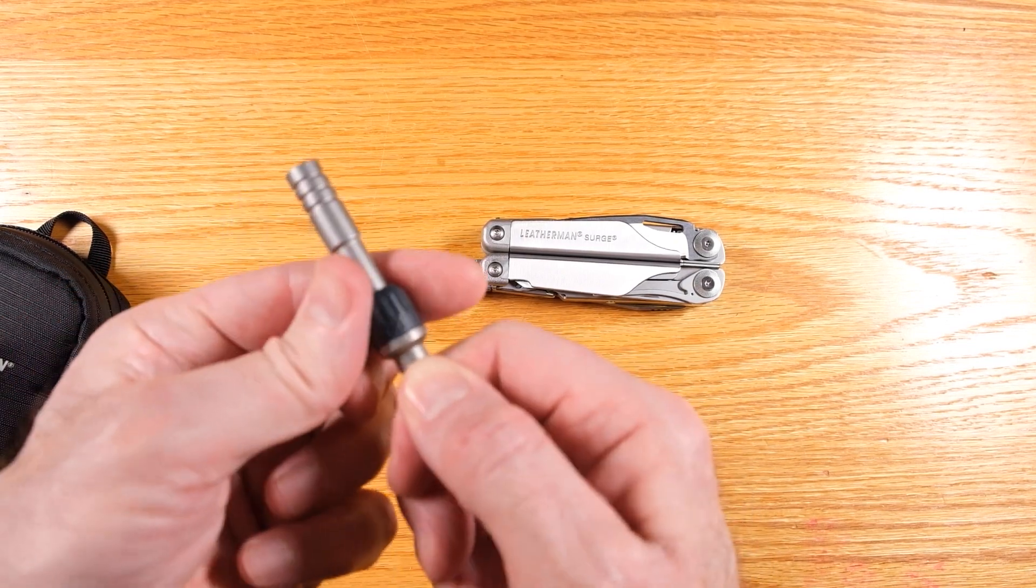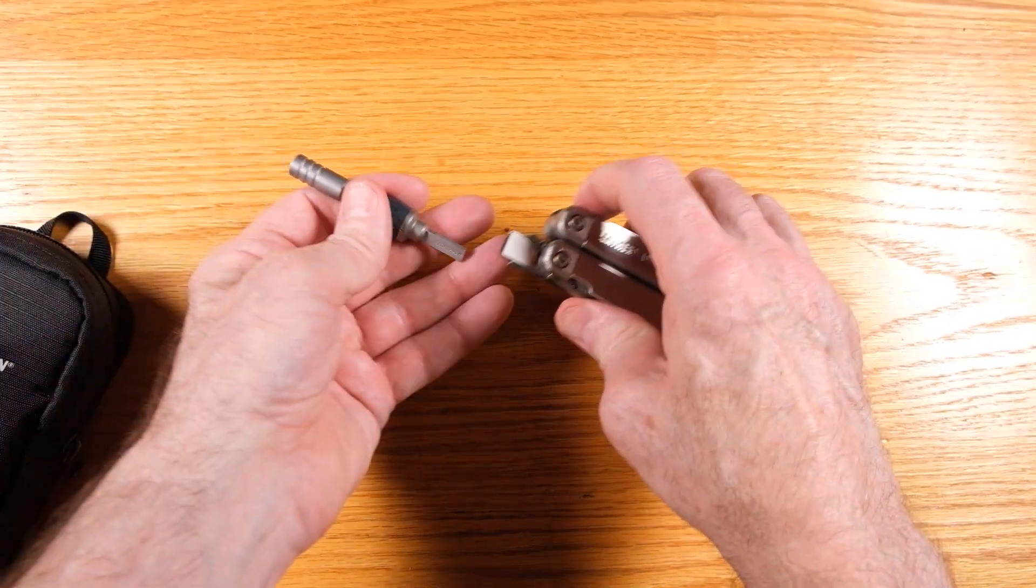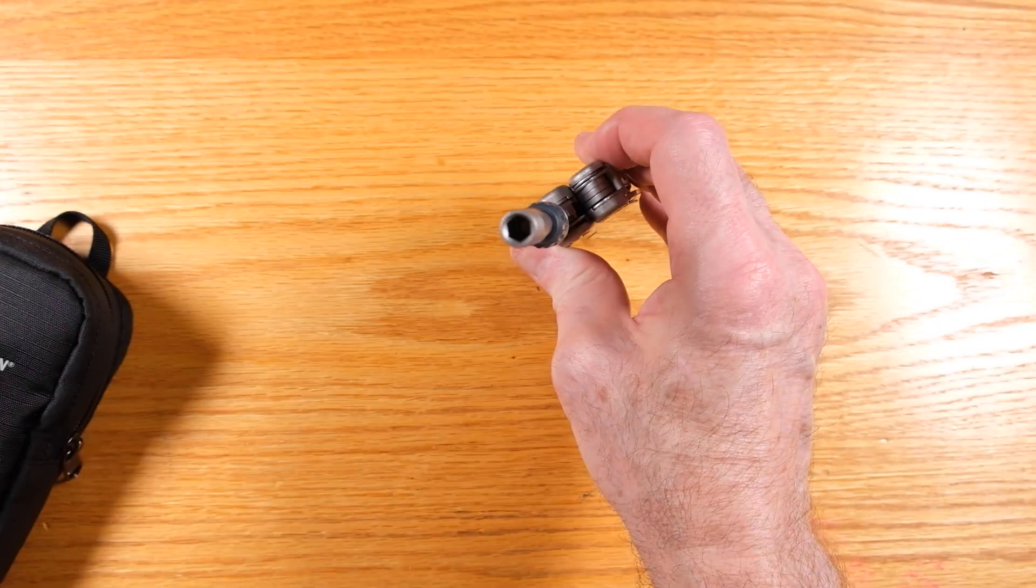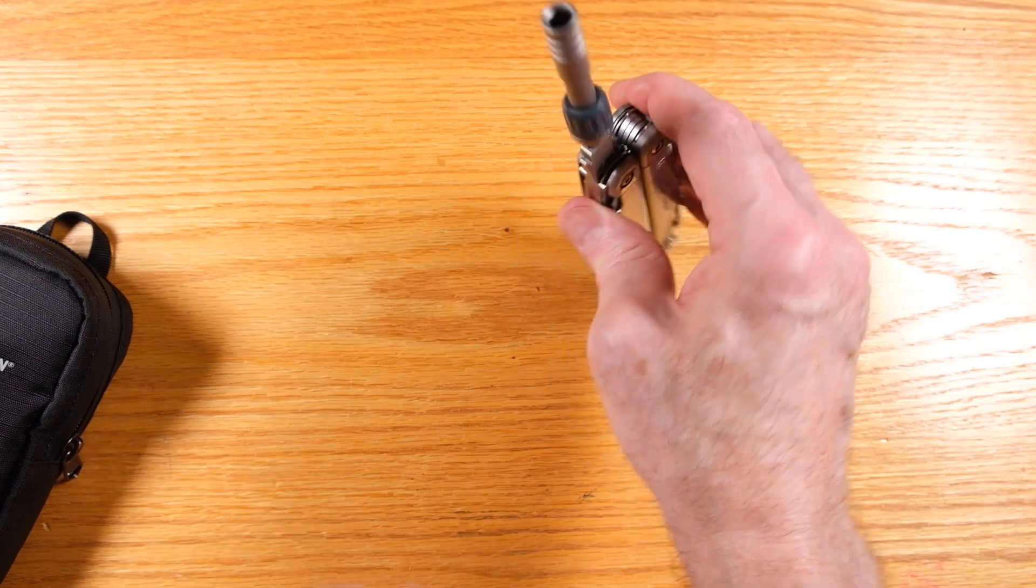You go back the other way, it ratchets the other way, or you can lock it. This goes in here. And on the end of this is a standard quarter inch hex bit holder.